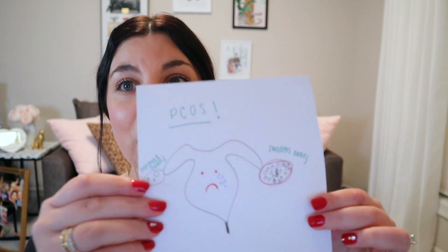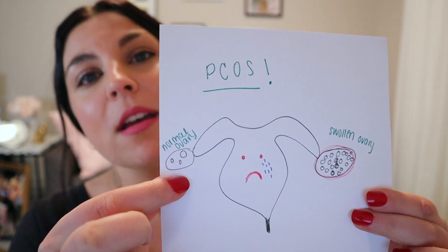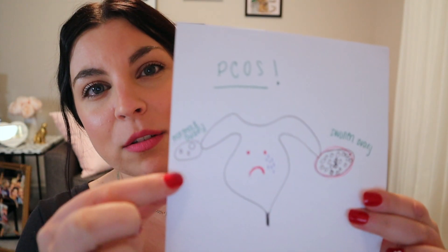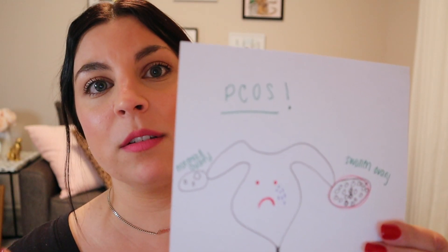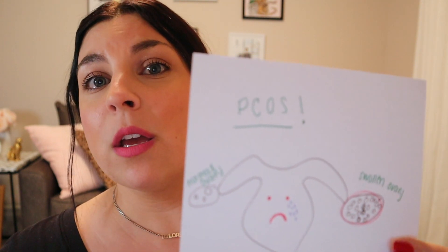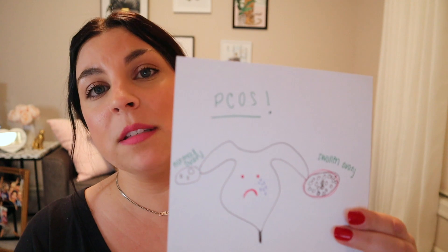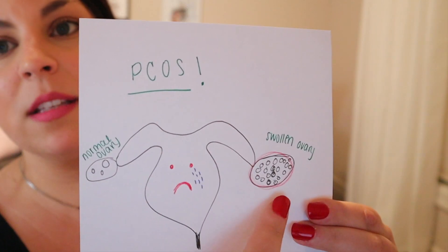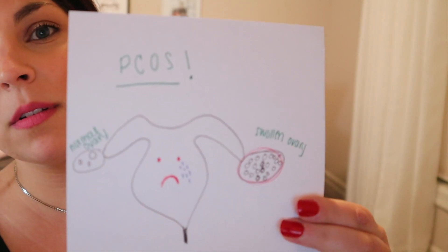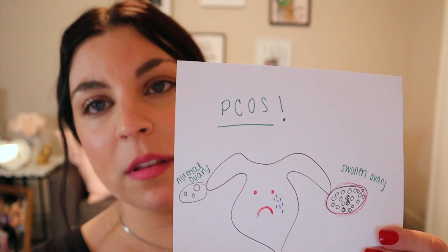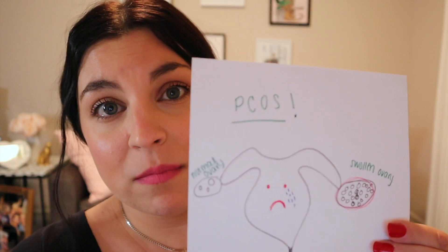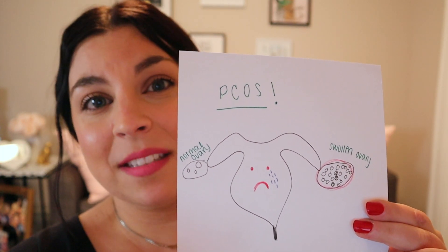I don't really like the name PCOS because it's kind of confusing. If we take a look at this photo, this represents a normal ovary. You see these tiny little circles in the ovary? Those are what are called follicles. In a normal cycle, hormones tell your uterus and ovaries to produce these follicles to eventually produce an egg that's going to be released to ovulate. In PCOS, you don't ovulate. This ovary here is really enlarged — it's swollen and has multiple tiny immature follicles. These immature follicles are what we call polycystic, and this is where the name PCOS comes from.